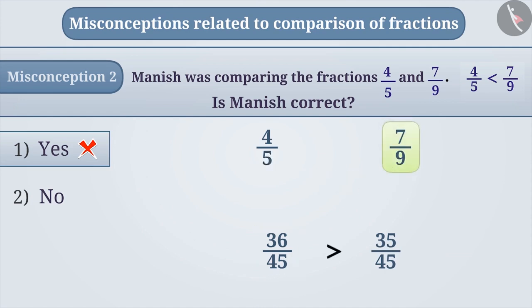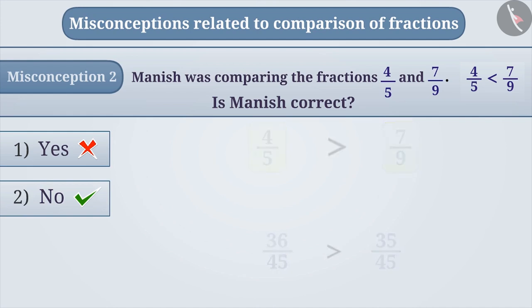Since 35/45 is smaller than 36/45, 7/9 is smaller than 4/5. Hence, Manish's answer is incorrect.